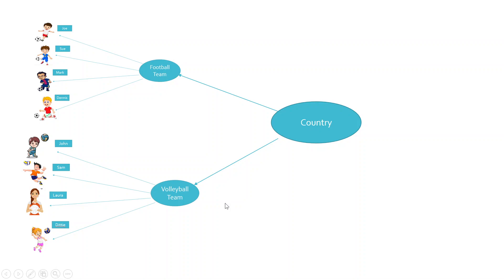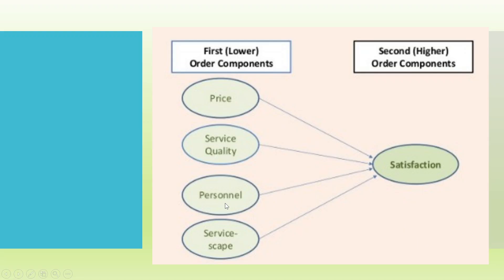Now let us try to understand the same concept with another example. Price is captured with the help of some measured variables. Service quality is captured with the help of some measured variables. Personnel is captured with the help of some measured variables. Service scope is again captured with the help of some measured variables. Now price, service quality, personnel, and service scope are all constructs, and collectively these constructs represent satisfaction.